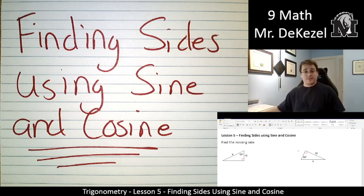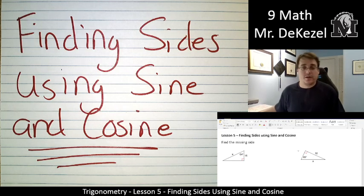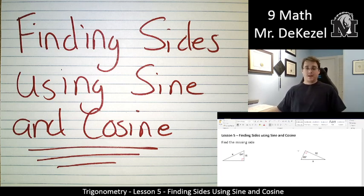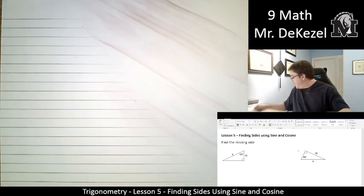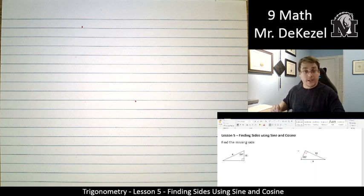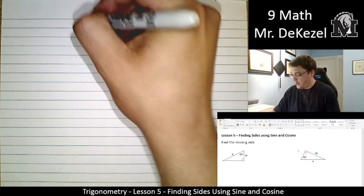Hello, grade nine math class. Welcome back to another lecture. We are going to do number five today, where we determine the side, the unknown side, and we might use sine, we might use cosine. Oh, the suspense. I know you can hardly contain it as well. Okay, let's draw our first triangle.